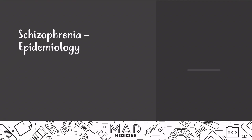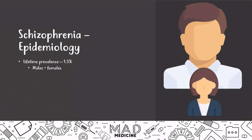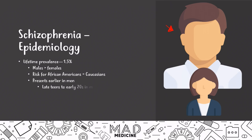When it comes to the epidemiology, you should know that there's a lifetime prevalence of 1.5% chance of getting schizophrenia. It's more prevalent in males than in females, and there's no given reason as to why. It's important because a lot of times in vignettes, it's going to be a male patient brought to you in the ER. The risk factors are the same for African Americans and Caucasians — race doesn't matter much for schizophrenia. It presents earlier in men, usually in the late teens to 20s, whereas in females it presents in the 20s to 30s.